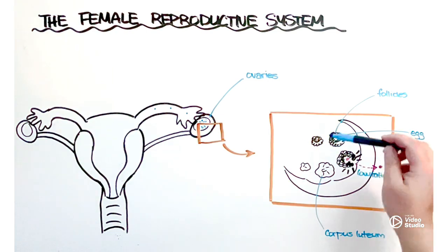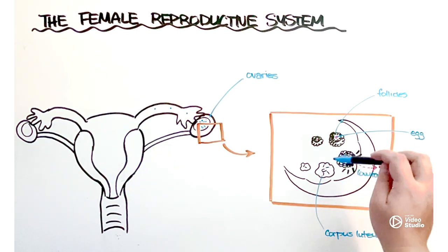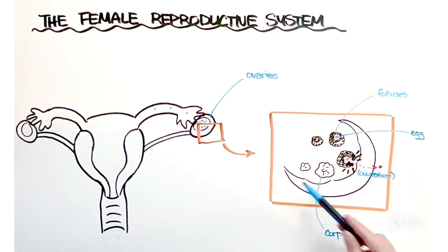So the process of follicle and egg maturation, ovulation, and then the formation and eventual breakdown of corpus luteum - those processes are all taking place throughout a 28-day cycle known as the menstrual cycle. If you want to know more about the hormones that regulate that process check out my video on the menstrual cycle.